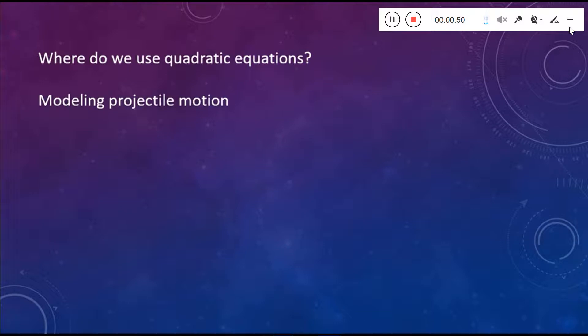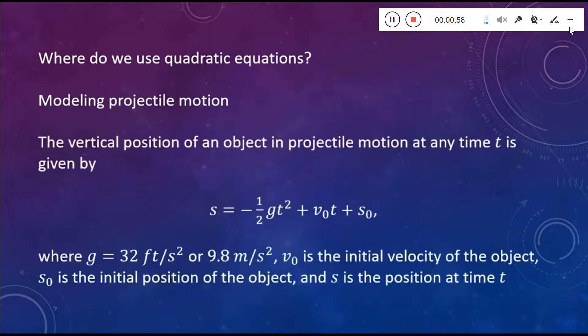Picture a cannonball being fired out of a cannon or you're launching a rocket up into the air. There's a horizontal and a vertical component to the motion. Well, the vertical position of the object in projectile motion at any time t can be given by the following model here. S equals negative one half g t squared plus v naught t plus s naught.